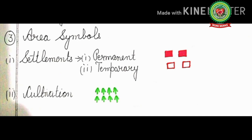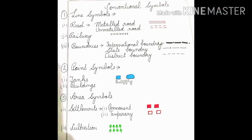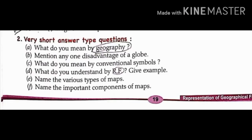A red square refers to permanent settlement and a hollow red square refers to temporary settlement. For cultivation, we use a specific symbol in green color. There are some other conventional symbols which will be discussed in the next video. Your homework for today is to watch this video, revise the terms, and do exercise two on page number 19 in your copy. Thank you.